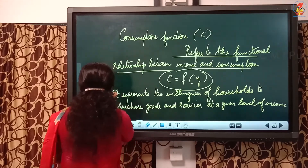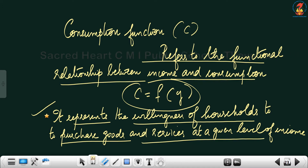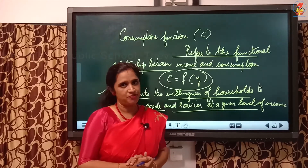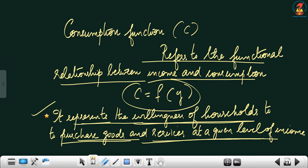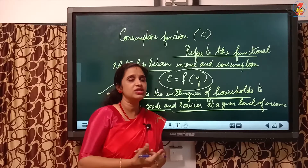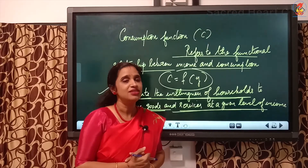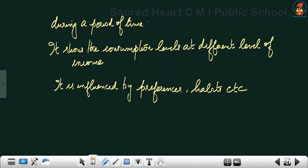C represents the willingness of households to purchase goods and services at a given level of income. Keynes used willingness and planning in this concept. How much the consumers are willing to purchase in the economy with the given level of income comes under the consumption function. The next point is that it shows the consumption levels at different levels of income.